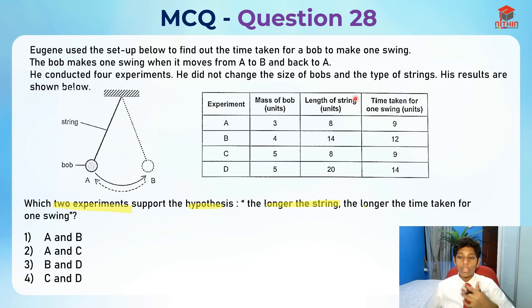In order for us to test something, everything else needs to be constant except the thing that we are actually looking at, except the independent variable, in this case the length of the string. So for us, the mass of the bob needs to be the same.